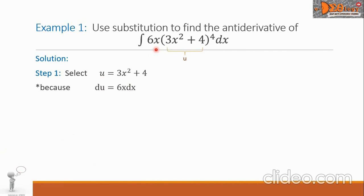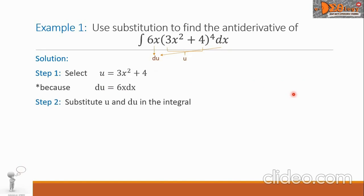Analyzing the integrand, the 6x and dx is the value of du, and we say that this du is already in the integrand. Step 2: substitute u and du in the integral. So 3x squared plus 4 becomes u, raised to 4, and 6x dx equals du.